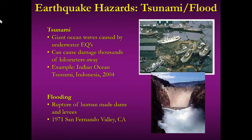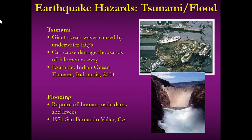Most tsunamis are generated by underwater earthquakes, making them an earthquake hazard. When the seafloor shifts due to a subduction zone earthquake, the seafloor can pop up by two, three, four, or five meters, causing the entire water column to move upward and outward. This is what happened in the 2004 Indian Ocean tsunami that struck off the coast of Indonesia, where over 250,000 people were killed. Flooding can also occur if a human-made dam is ruptured — there have been cases where dams broke during earthquakes causing massive flooding.